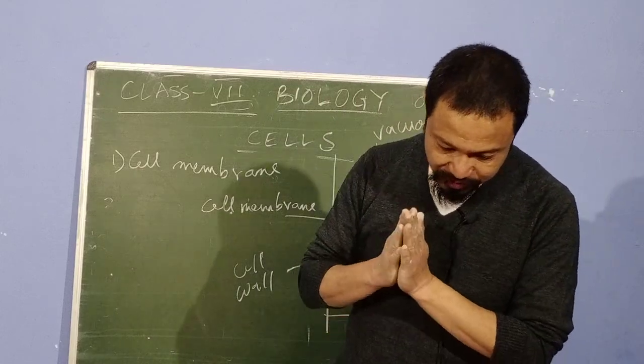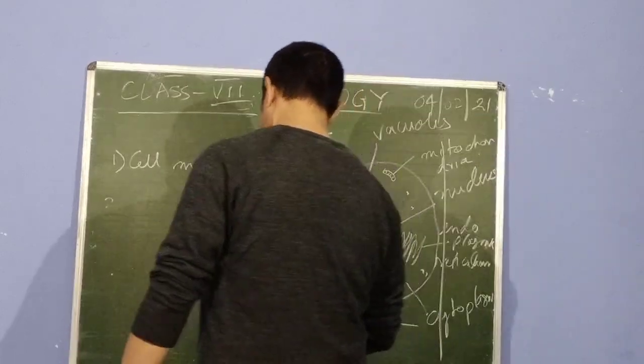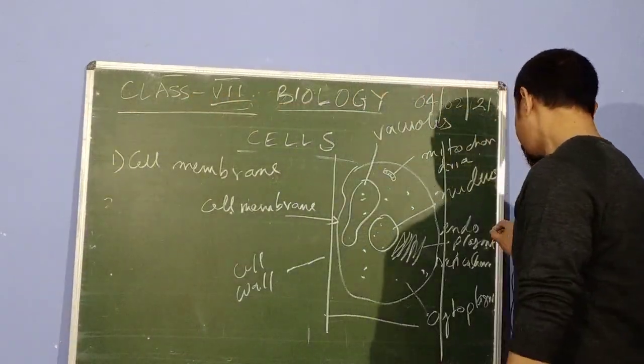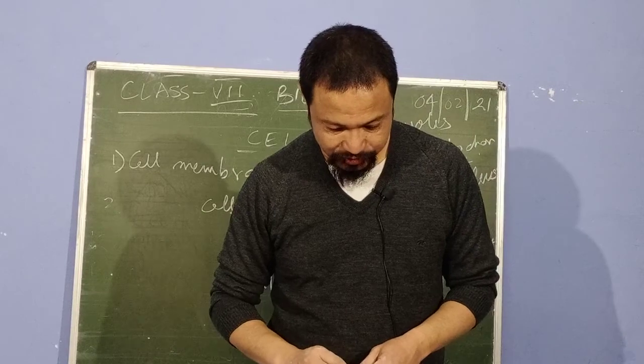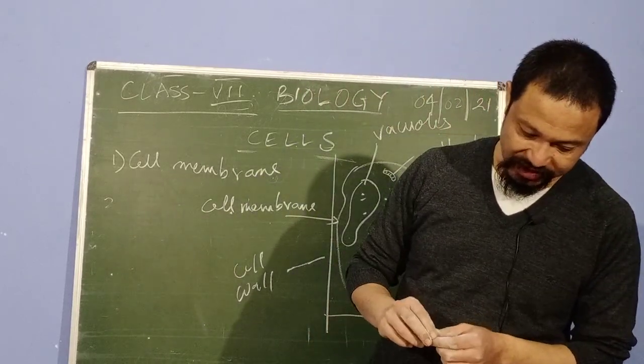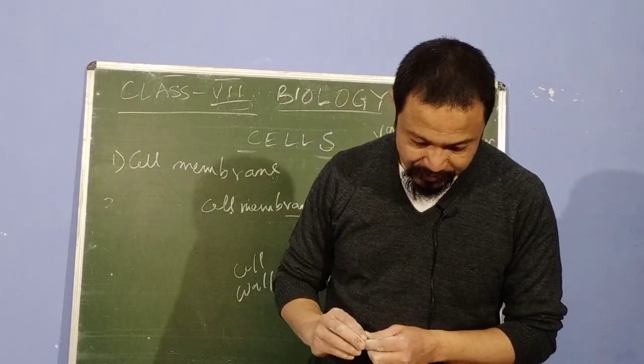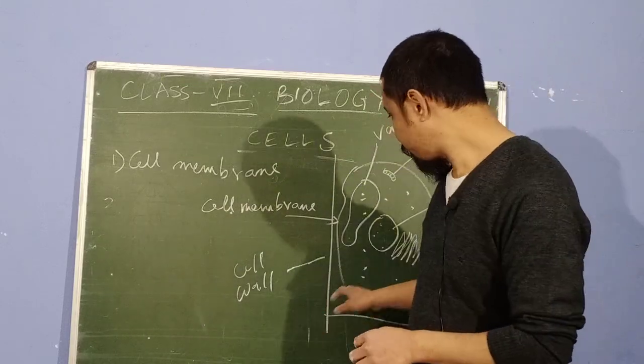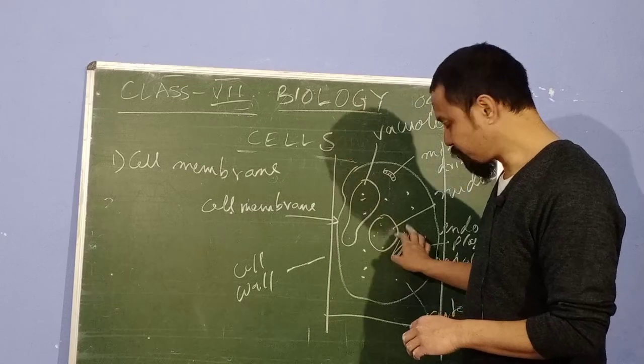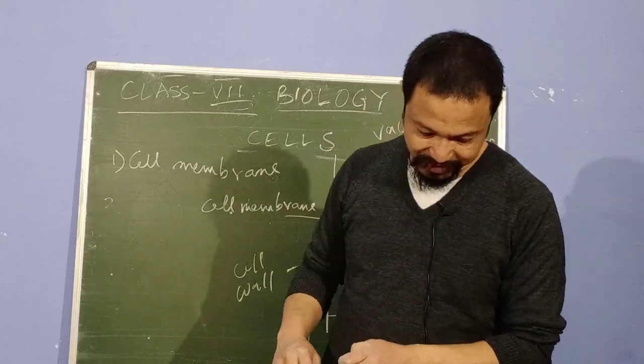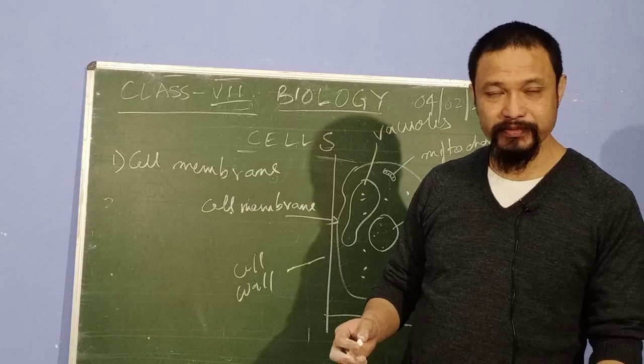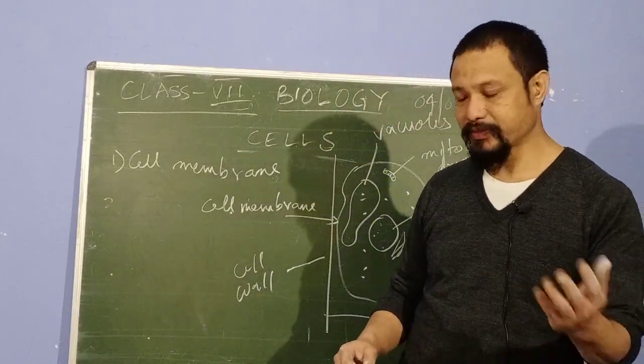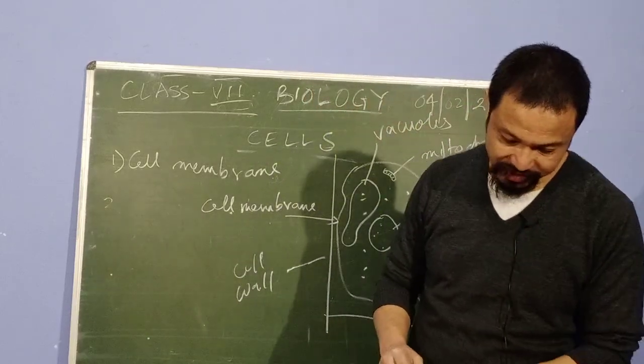Then we have the endoplasmic reticulum. I think I've done it. What does the endoplasmic reticulum do? It's a system of complex tunnels that are spread to all the cell. The nuclear envelope joins with the membrane of the endoplasmic reticulum, the nuclear membrane. That's why I made the endoplasmic reticulum out here. There are two types of endoplasmic reticulum: smooth endoplasmic reticulum and rough endoplasmic reticulum. But for class 7, we will just concentrate on endoplasmic reticulum.